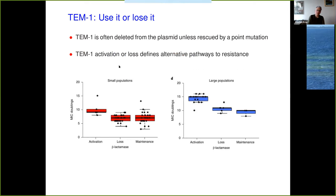In some sense, TEM-1 activation or loss defines alternative pathways to resistance. Comparing MIC levels achieved in small and large populations: activation gives a significantly higher MIC than getting rid of TEM-1 or maintaining it unchanged. This happens much more frequently in the large populations.